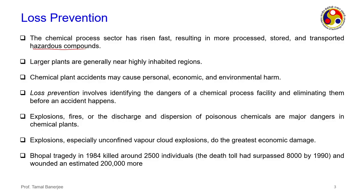The chemical process sector has grown fast, resulting in more processed, stored, and transported hazardous components. Larger plants are now coming up near highly inhabited regions because placing a plant in a remote region makes movement of material, plant, and manpower very difficult and adds cost. Chemical plant accidents can cause personal harm, economic loss of materials, and environmental harm — since vapors vented to the atmosphere increase above permissible limits and create health issues.